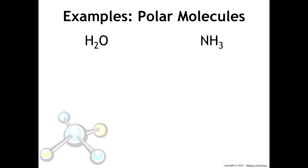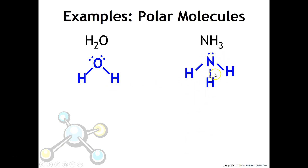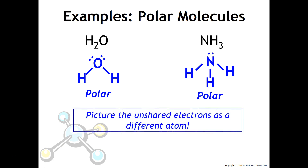Looking at H2O and NH3: in water, the central oxygen has two unshared pairs and two hydrogens. Unshared pairs are not the same as hydrogen, so H2O is polar. In ammonia, there is an unshared pair plus hydrogens — again, different things connected to the central atom, making it polar. A helpful tip: treat any unshared pair on the central atom as if it were a different atom.